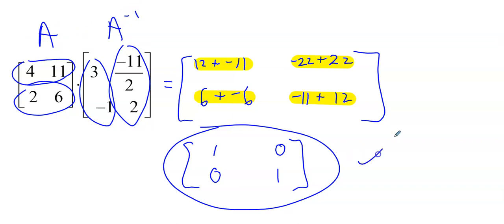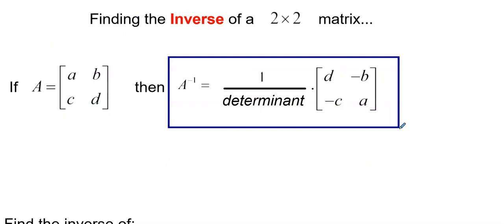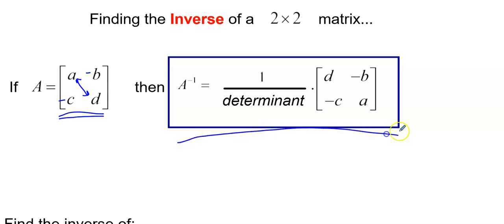This is the identity matrix, which means if this is matrix A, this is the inverse of A — they are inverses of each other. We've proven it because the product is the identity matrix. Now, there's actually a formula for finding the inverse of a matrix. If you have matrix [a, b; c, d], it's 1 over the determinant times the modified matrix: you flip a and d, and negate b and c — change the sign of b and c — and that gives you the inverse.